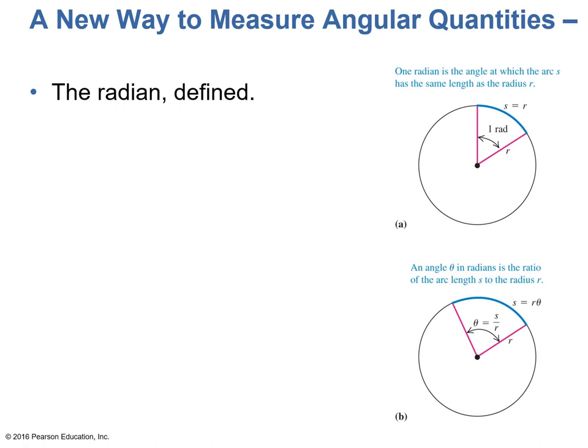As you look to the right, you see two figures, Figure A and Figure B. One radian is the angle where the arc is the same length as the radius. S represents the arc, and it's the same length as the radius.